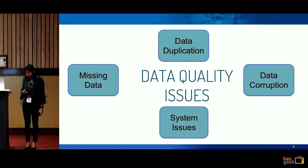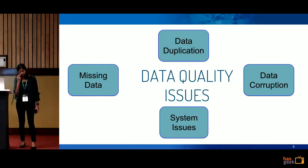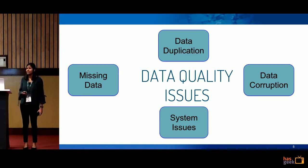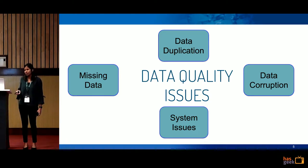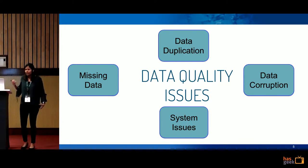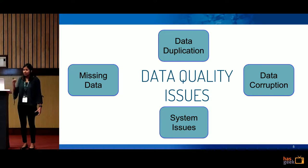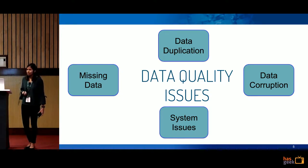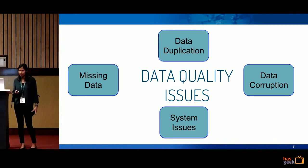This reminds me of the data quality issues that we ran into. We had issues like missing data — the data wouldn't be coming to us, or there might be a bug in the pipeline causing data to be missing. We had data duplication issues; the query might not have been idempotent when we wrote it, so we might be processing the same data again and again. We also had data corruption issues and system issues due to which the ETL itself did not run.